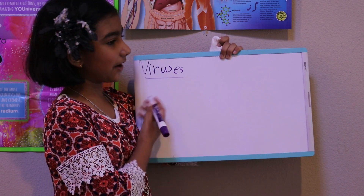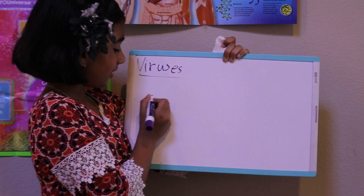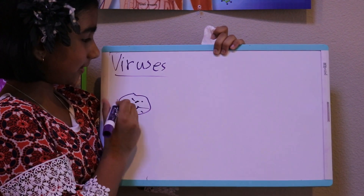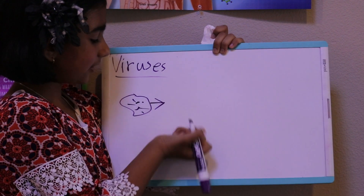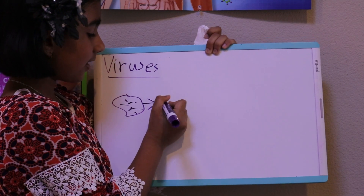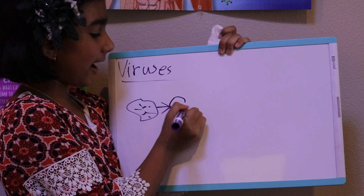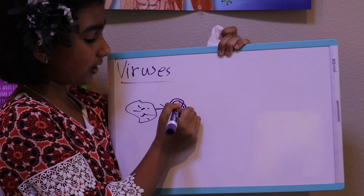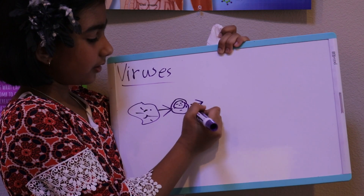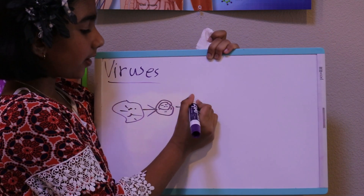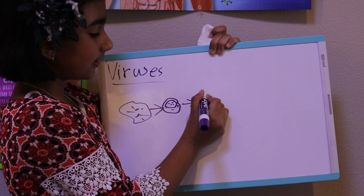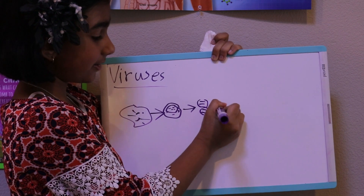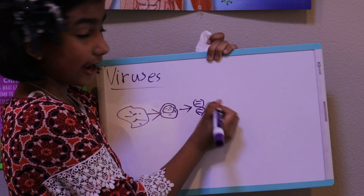Now I'm gonna tell you how the virus replicates itself. Here is my version of coronavirus, and this is my version of your cell in your body. What the virus does is it replicates — it finds a cell in your body. When your cell replicates, it replicates DNA and RNA.